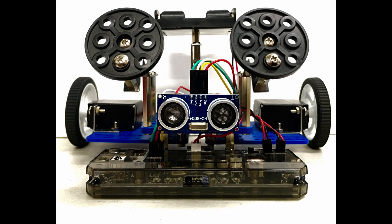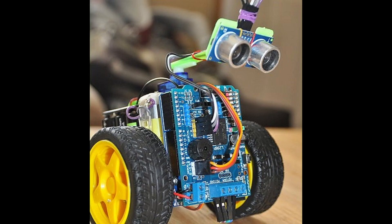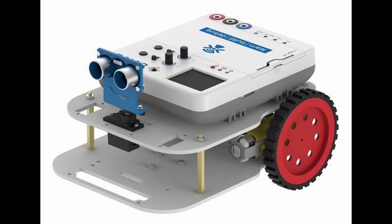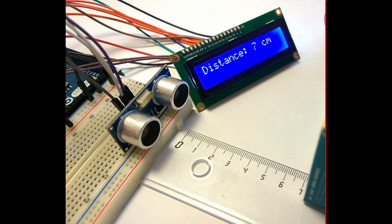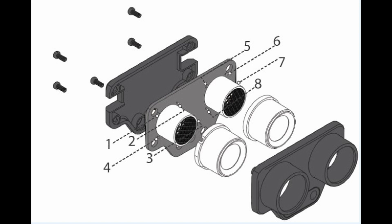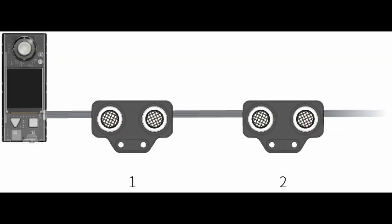The frequency of sound waves that can be heard by the human ear is 20 to 20,000 Hz, and sound waves above 20,000 Hz are called ultrasonic waves. When sound waves encounter obstacles, they will be bounced and received by the probe of the ultrasonic sensor, allowing us to calculate the distance between the ultrasonic probe and the obstacle.